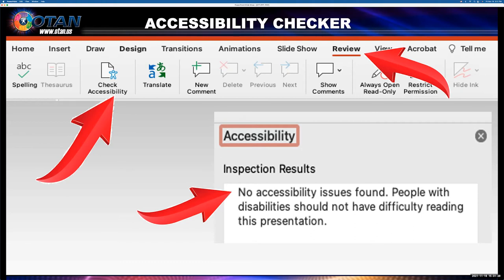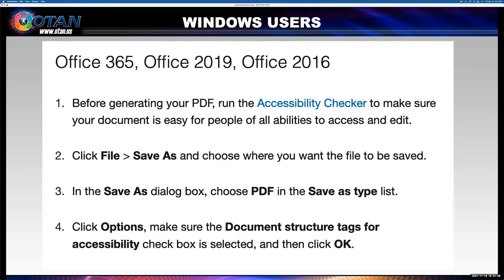Now that my PowerPoint presentation has earned a pass, I am ready to generate the PDF. Let's look at Microsoft's help page for best practices in generating a PDF. In PowerPoint, click File on the upper left, select Save As, and in the Save As dialog box, choose PDF as the Save As type. Number four is the most important step: click Options and make sure the 'Document structure tags for accessibility' checkbox is selected, then click OK.